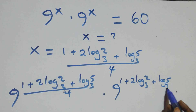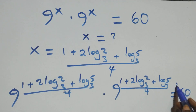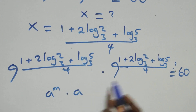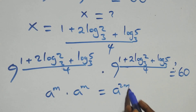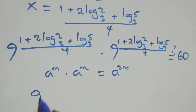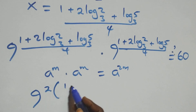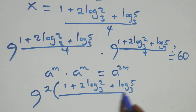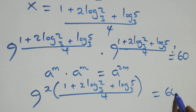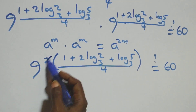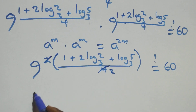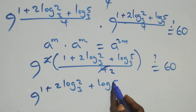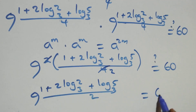Let's verify: substituting x back, we need to check that the expression equals 60. Using the rule a raised to power m times a raised to power m equals a raised to power 2m, this becomes 9 raised to power 2 times (1 plus 2 log 2 base 3 plus log 5 base 3) over 4, which simplifies to 9 raised to power (1 plus 2 log 2 base 3 plus log 5 base 3) over 2 — equals 60.